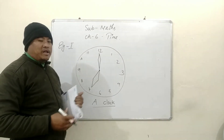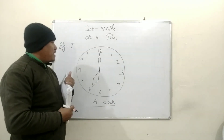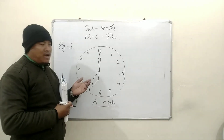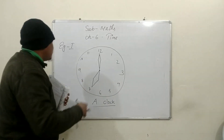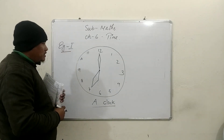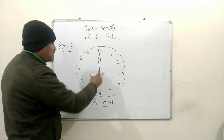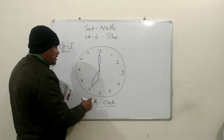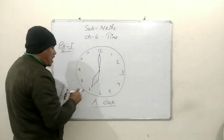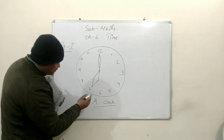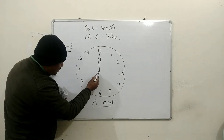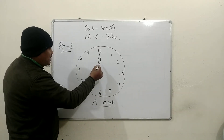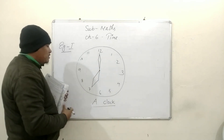Now children, let us observe the hands of the clock and find out what time it is. As you can see here, this is your minute hand and this is your hour hand.